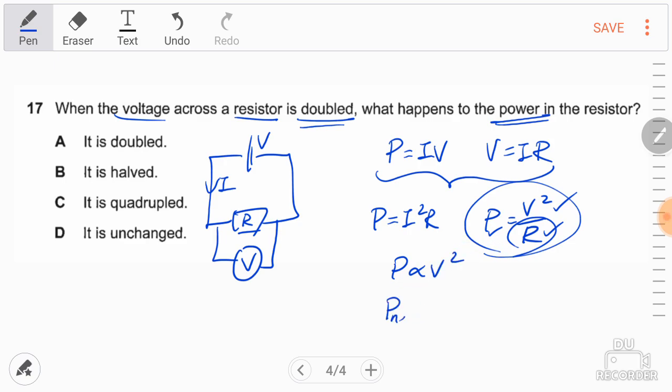So the new power, because the voltage is doubled, so it's 2V the whole thing squared and because of this squared it will become 4V squared. Since V squared equals the original power, I will replace this V squared with P, so the new power will be actually 4 times the original power.